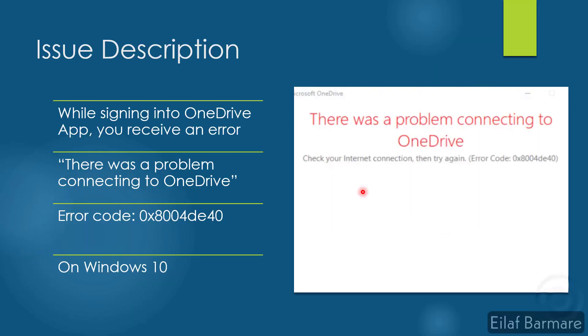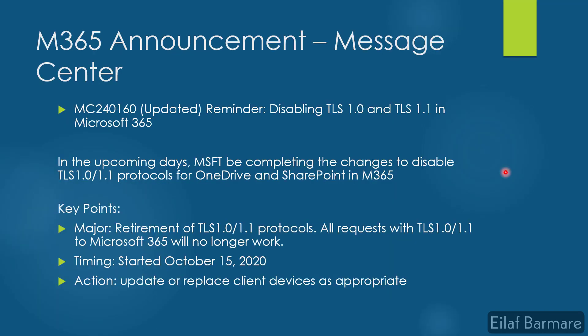While signing in to OneDrive, you might receive an error stating 'There was a problem connecting to OneDrive. Check your internet connection then try again,' followed by an error code. Microsoft has been planning and notifying about these changes for quite a while. You can find the details in the Microsoft 365 admin center, and you can also refer to the provided ID to get more details.